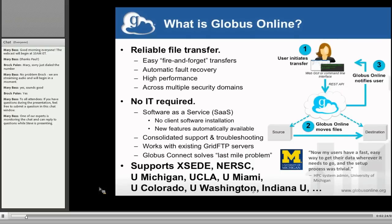We decided a couple of years ago to jump in and try a new direction. We've spent the better part of a decade and a half here at Argonne and the University of Chicago working on core infrastructure for high-performance data transfer that's at the heart of a lot of the big science grids, but we'd never really tried to make it easy for any end user to adopt and use on their own. That's what we decided to do with Globus Online.